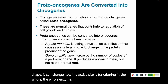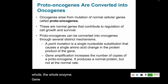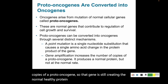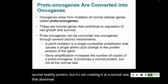Gene amplification is when you increase the number of copies of a proto-oncogene. That gene is still creating the normal healthy protein, but not at a normal rate. That abnormal increase in protein product is going to lead to the development of cancer.